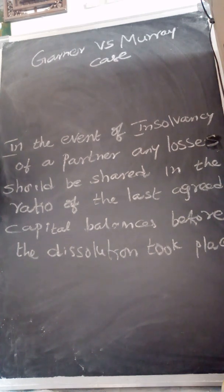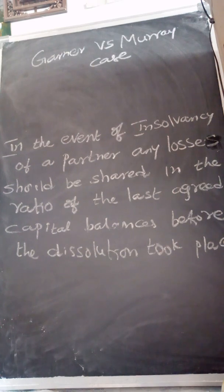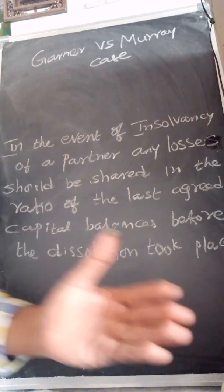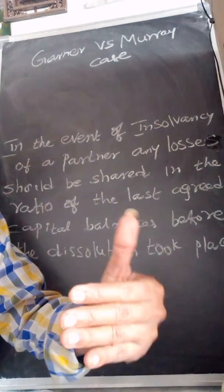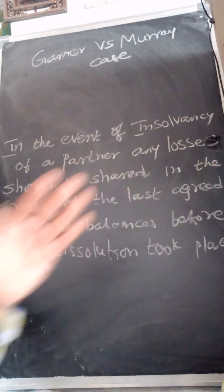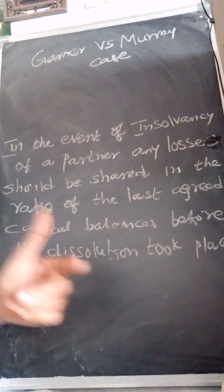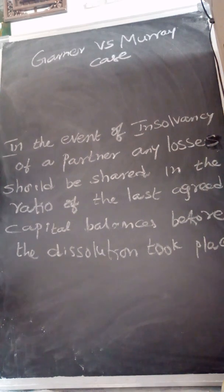The realization loss should be distributed to all the partners, whereas the debit balance of the insolvent partner is to be borne by the solvent partners in their capital ratios. The capitals of the partners are of two kinds: fixed capital and fluctuating capital. If nothing is specified, we assume their capitals are fixed. In case of fluctuating capitals, after making all adjustments, you calculate the final capital amounts and distribute in that ratio.